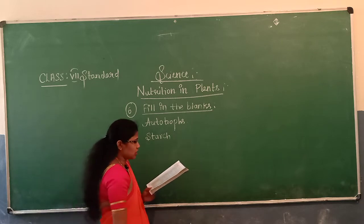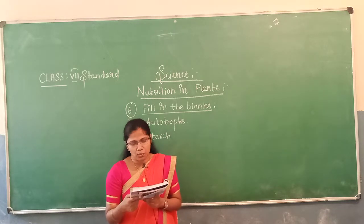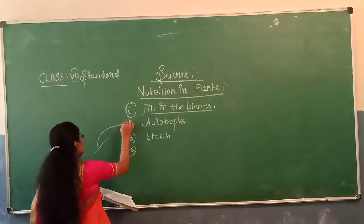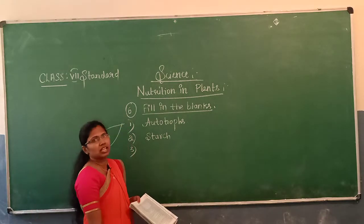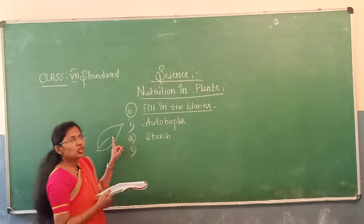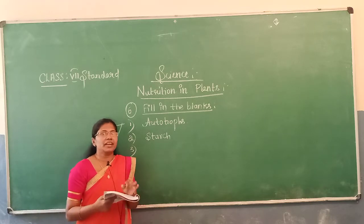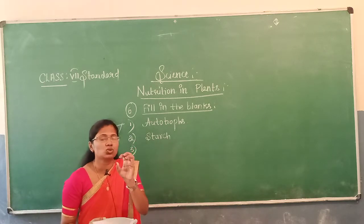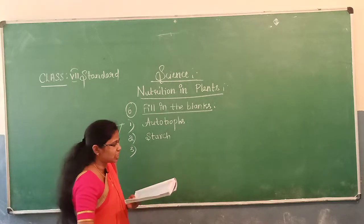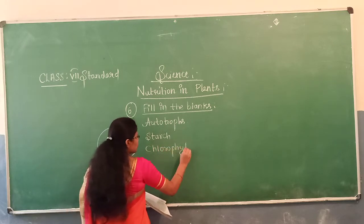The third question: in photosynthesis, solar energy is absorbed by a pigment. The green leaves are the food factories of the plant, and they contain a pigment which absorbs solar energy. We call that pigment chlorophyll. So the third answer is chlorophyll.